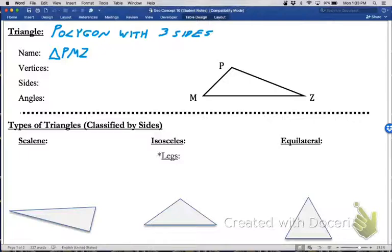Those corners of the triangle are actually called vertices. So the vertices of the triangle are P, M, and Z, separated by commas.